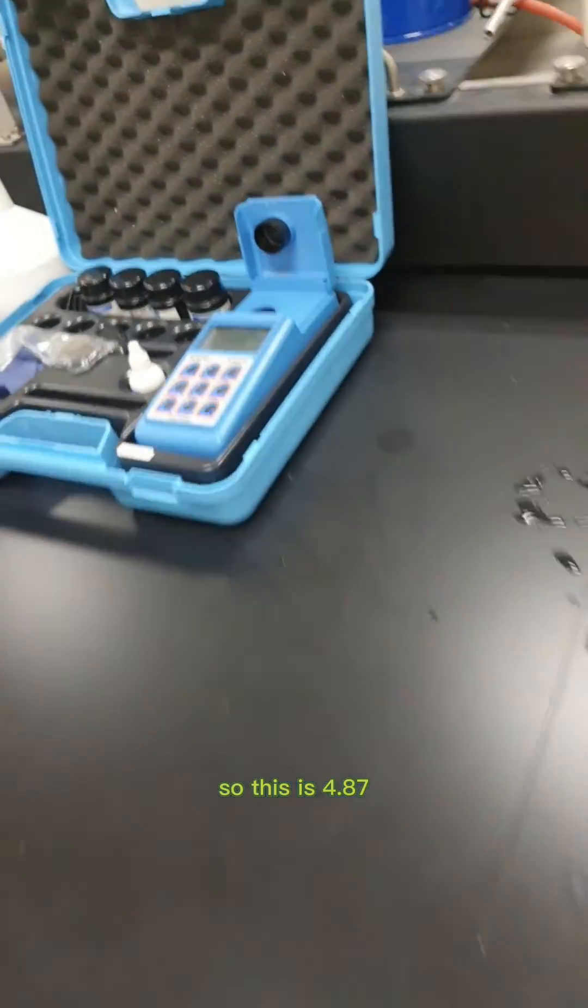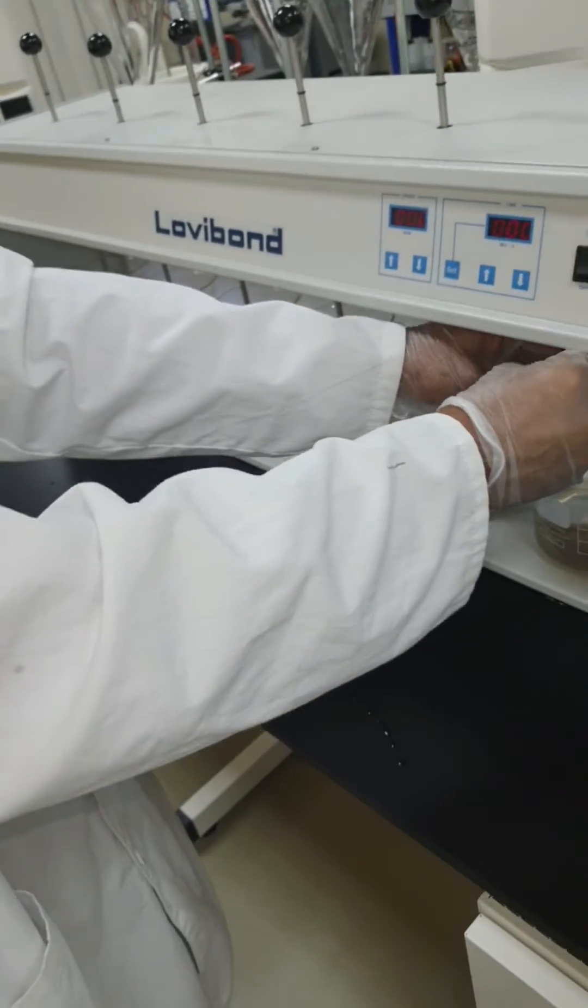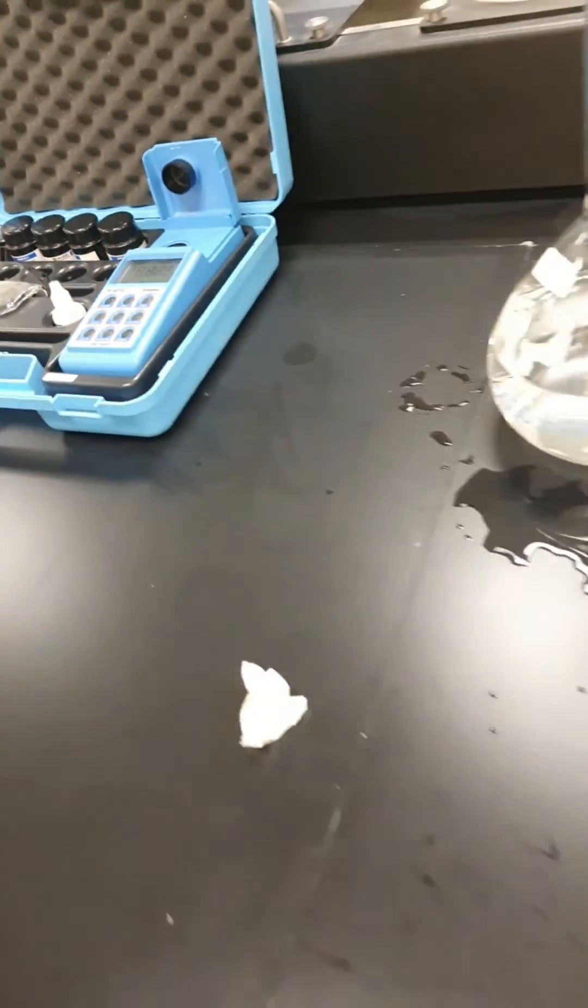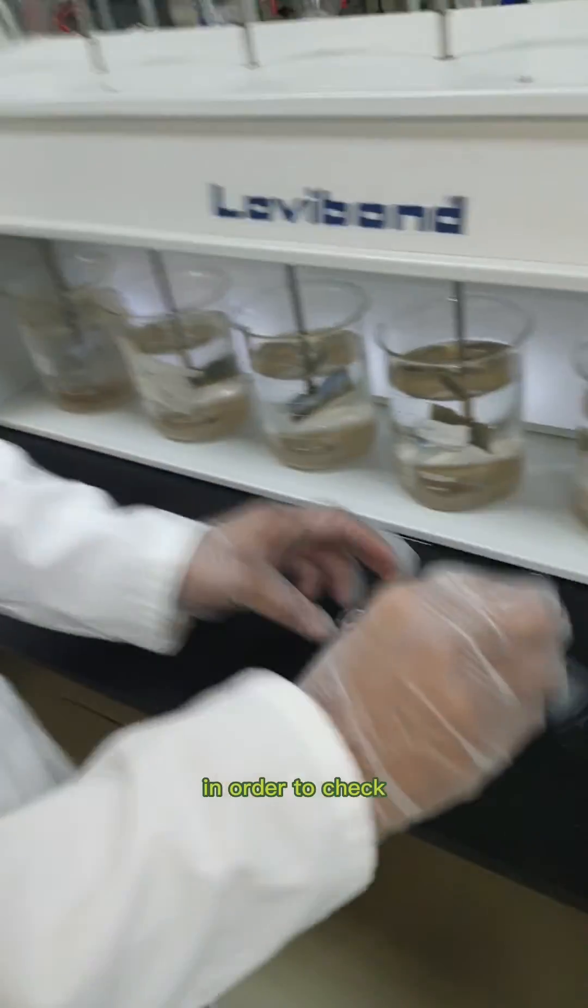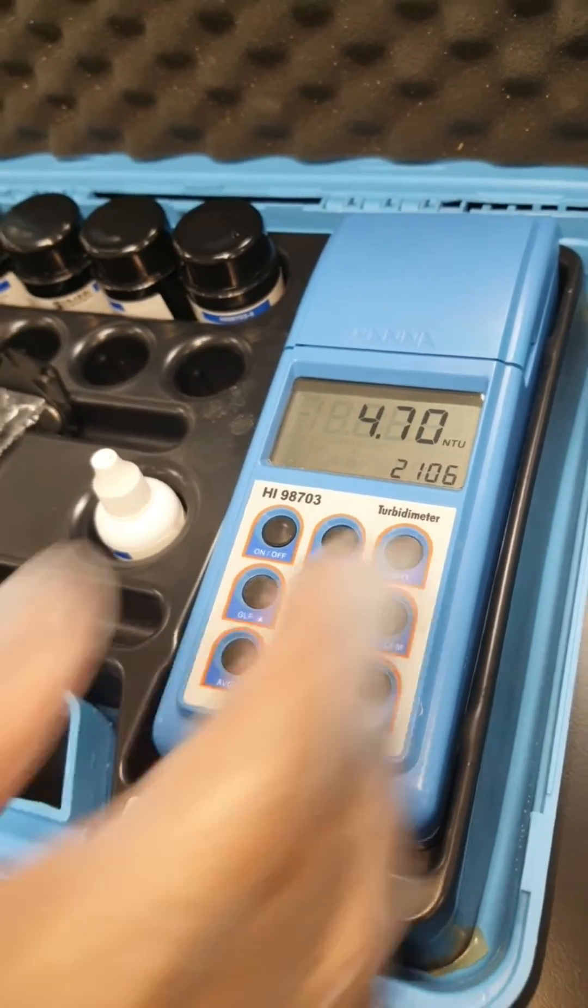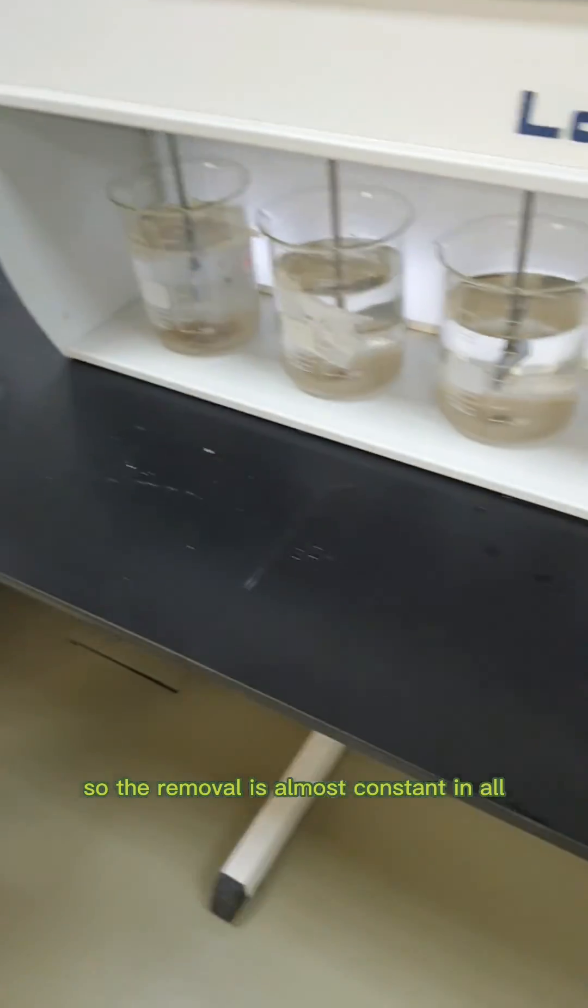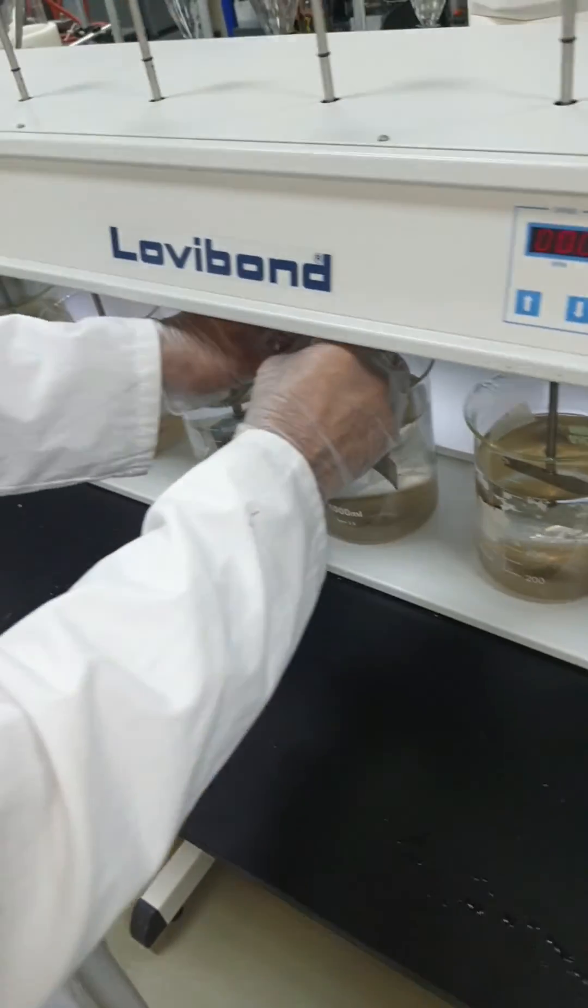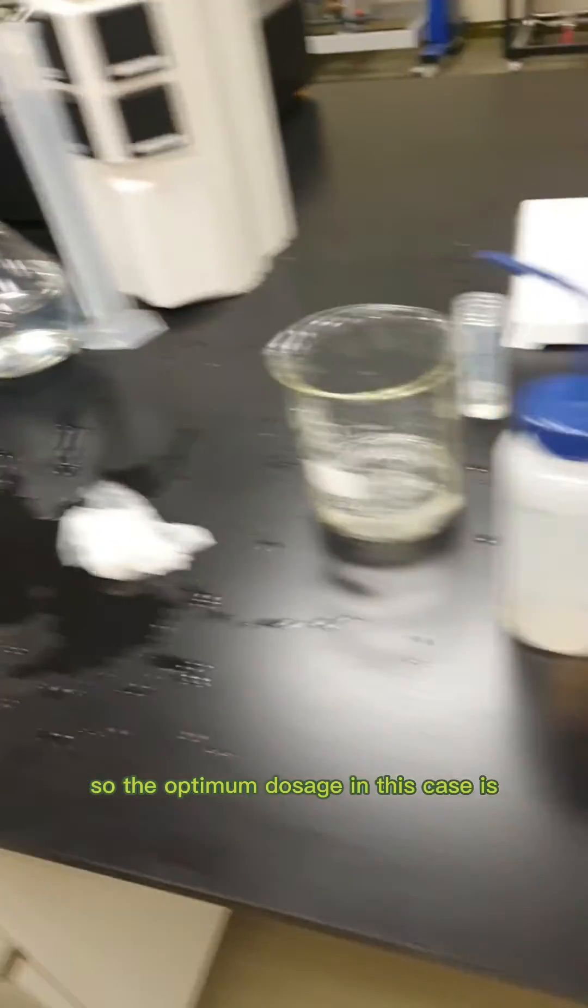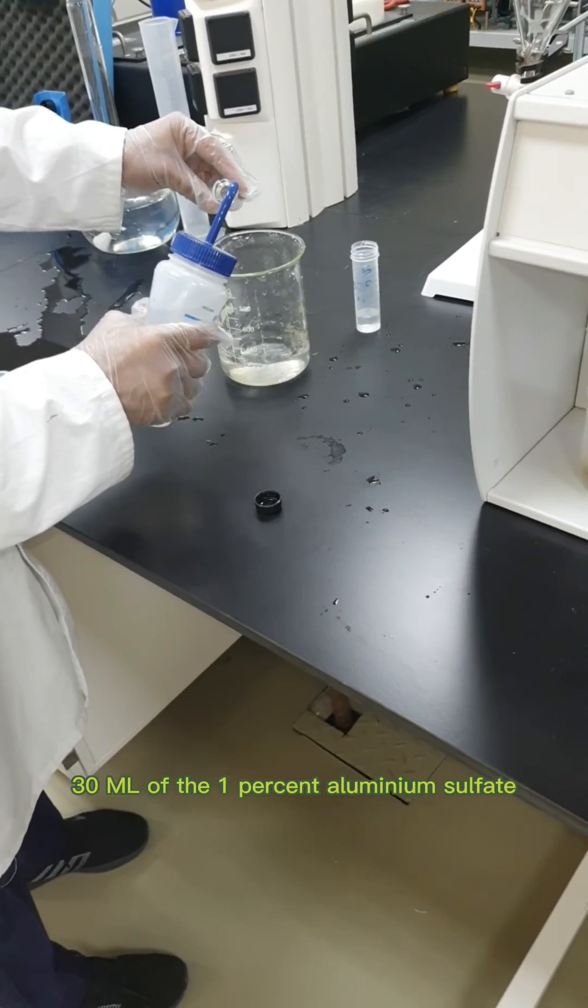This is 6.35. To confirm, we will check the second to last one also. The removal is almost constant. We will check one more to confirm. The optimum dosage in this case is 30 ml of the 1% aluminum sulfate.